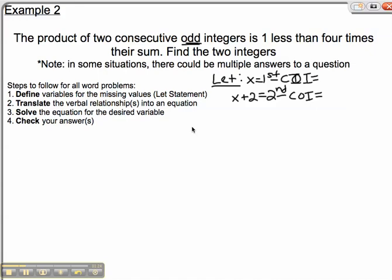Now we took care of step one, we've defined the variables. Now we have to do the hard part, which is translate. Just read it carefully. The product of two consecutive odd integers is. Right away, I see that word is, and I know that's where the equal sign goes. What I'm underlining in red, that's going to be the left side of your equation.